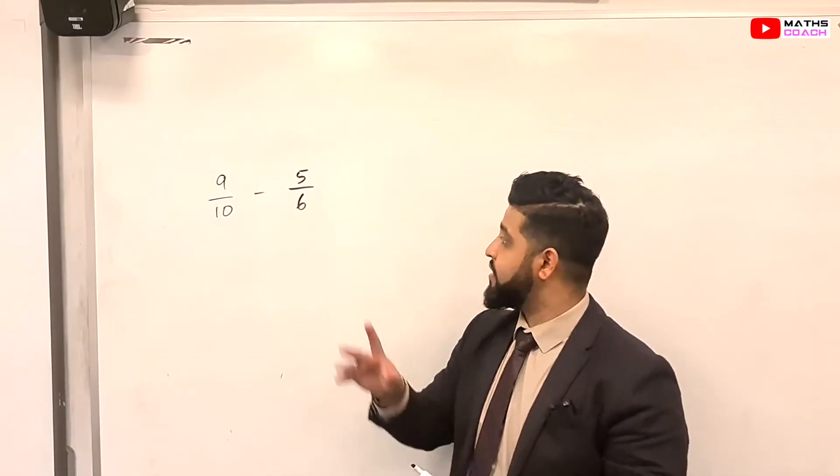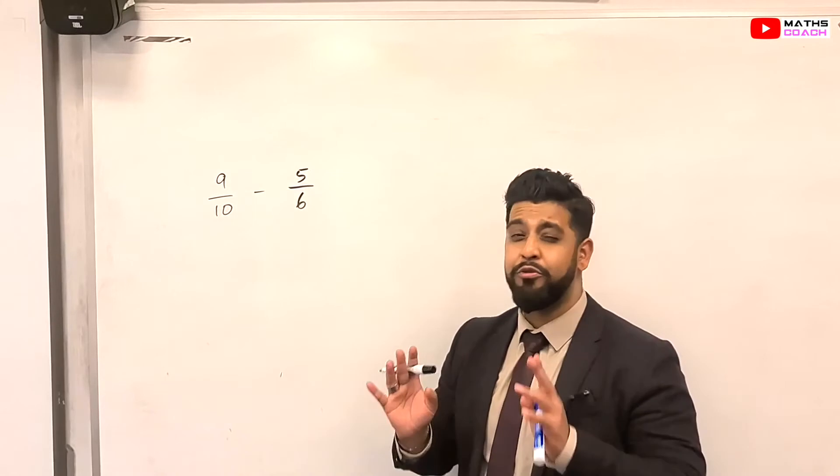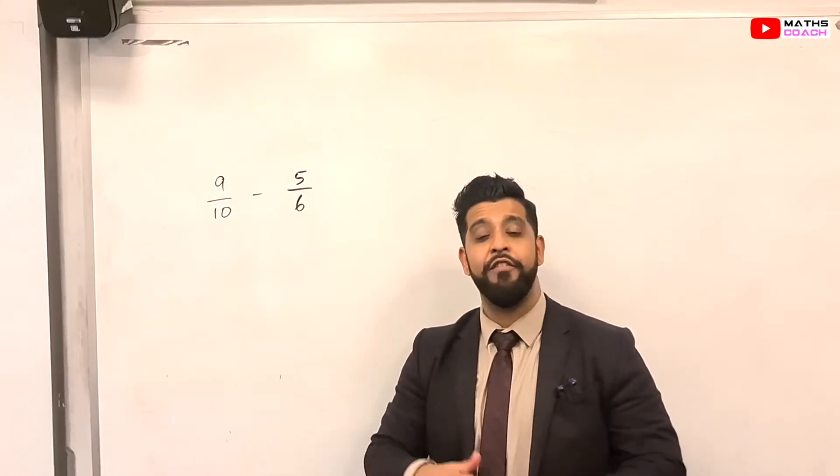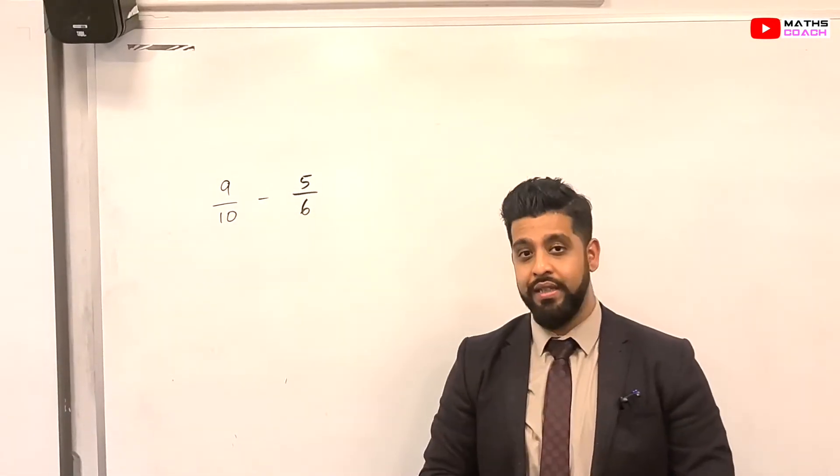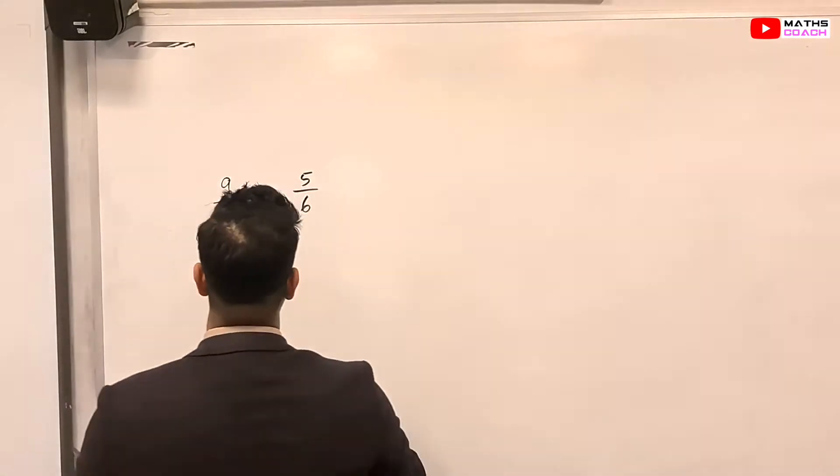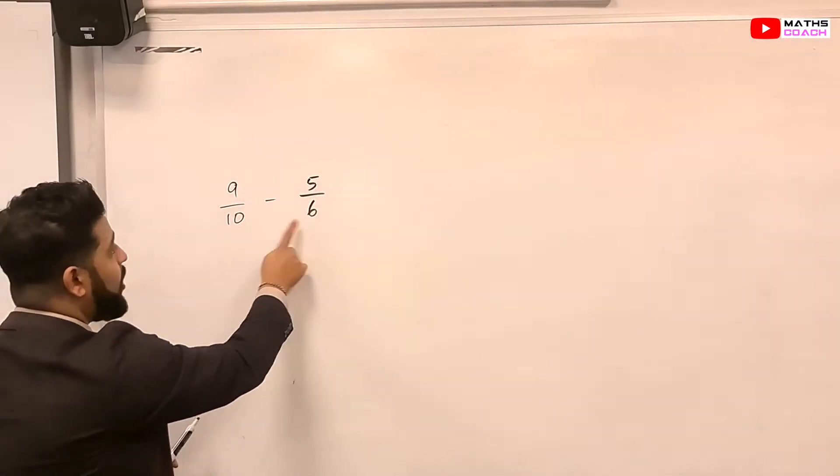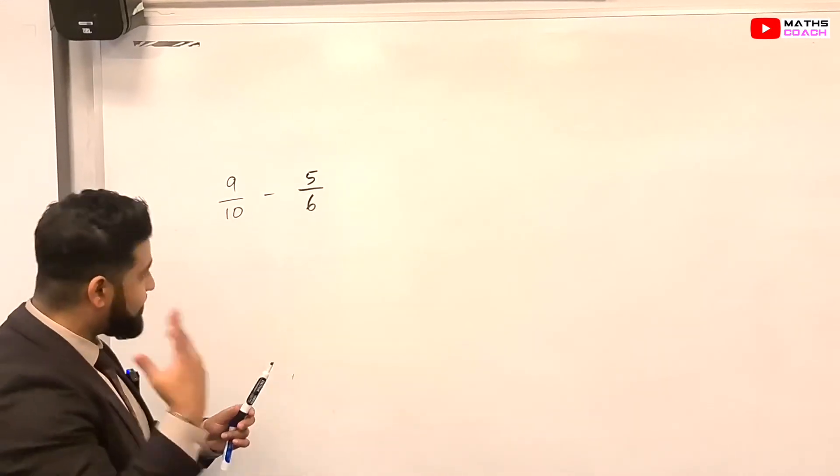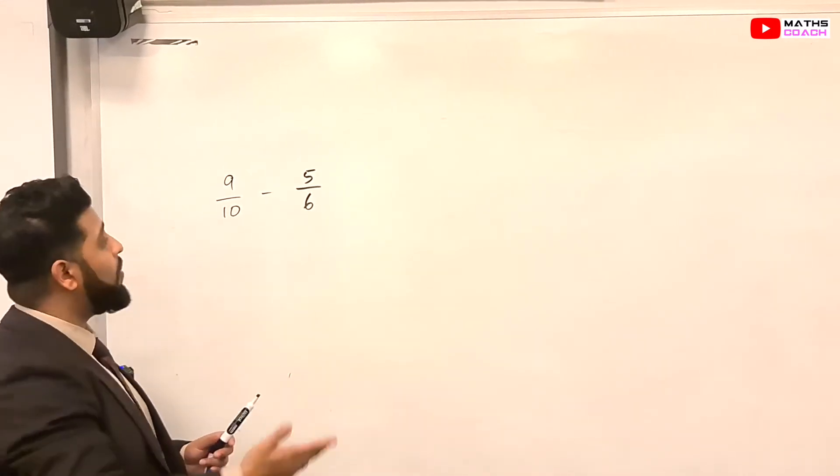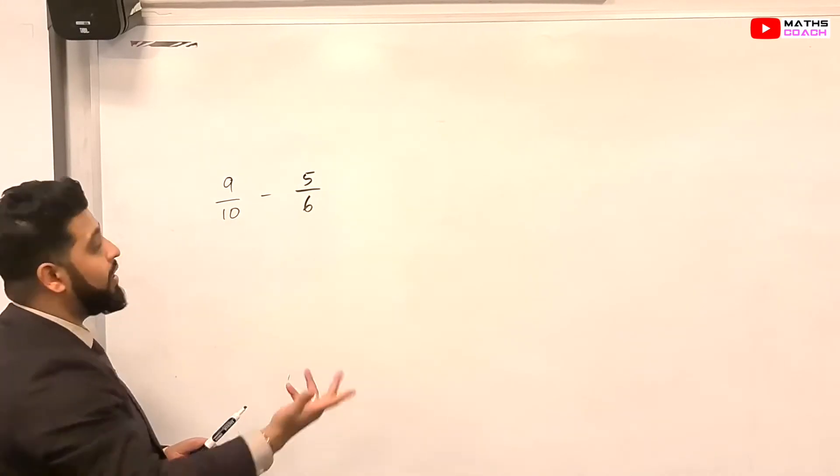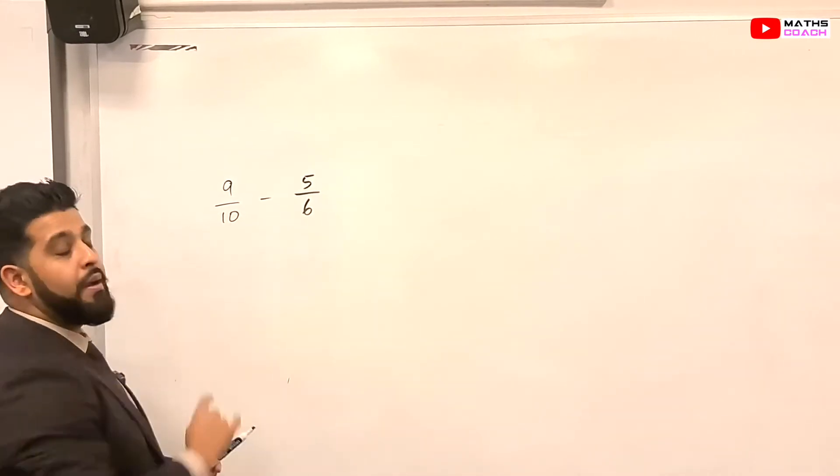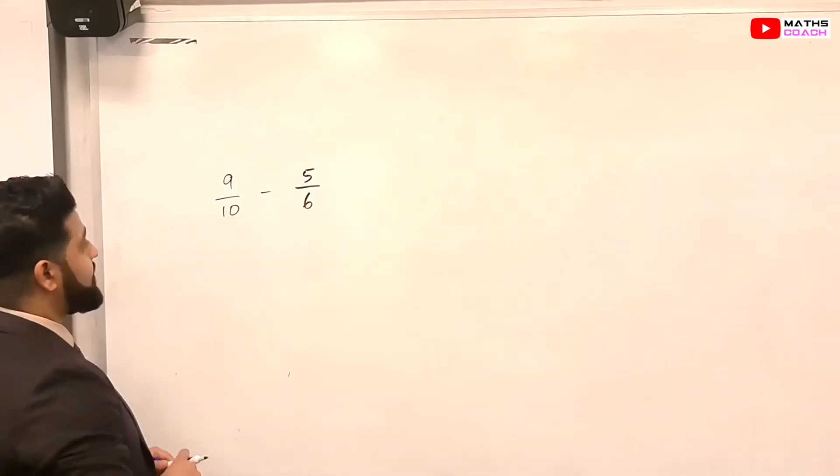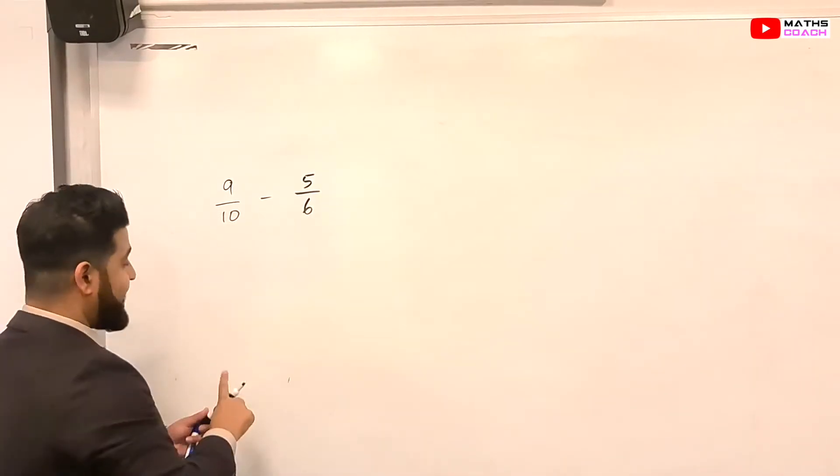Now, we are going to look at a subtraction one. Now, subtraction works exactly the same way. The method is exactly the same, except you are taken away at the end. Alright? So just like before, we want to find a common, lowest common multiple of 10 and 6. You can think of it or you can go for the method that I told you earlier, which is to multiply by the opposite number. So here, you'll multiply this by 6 and this by 10.